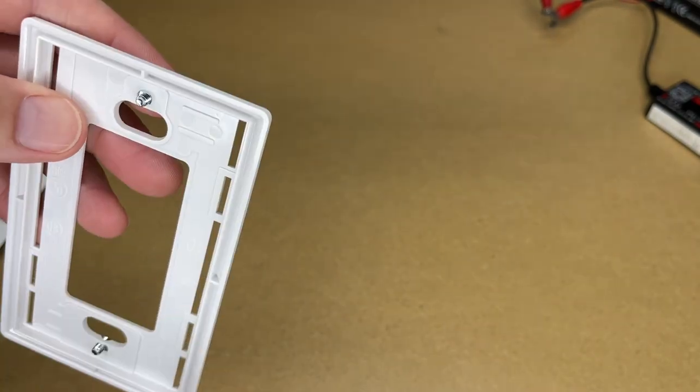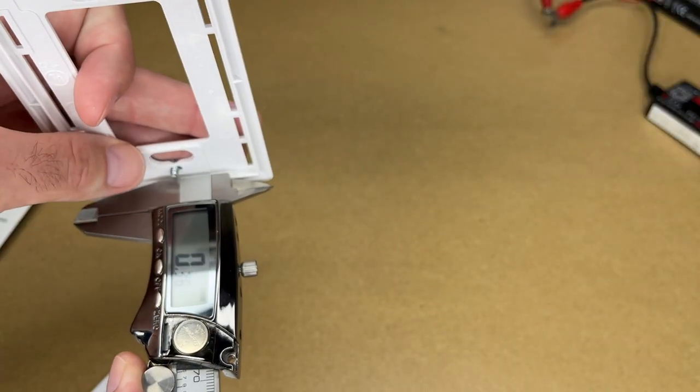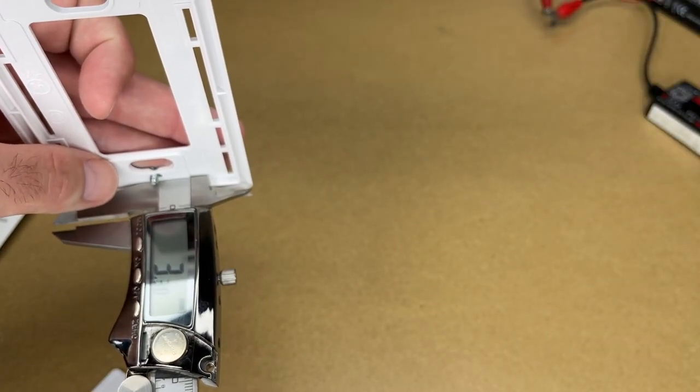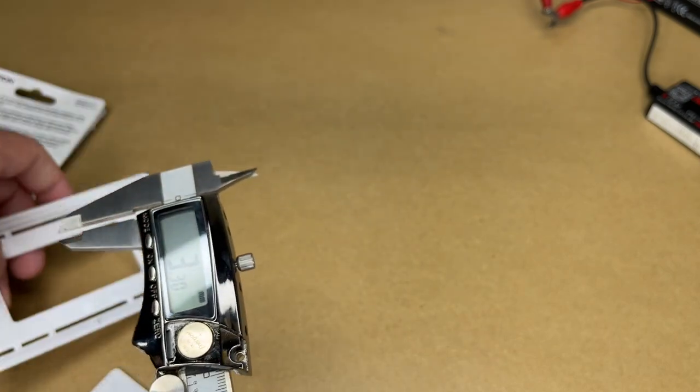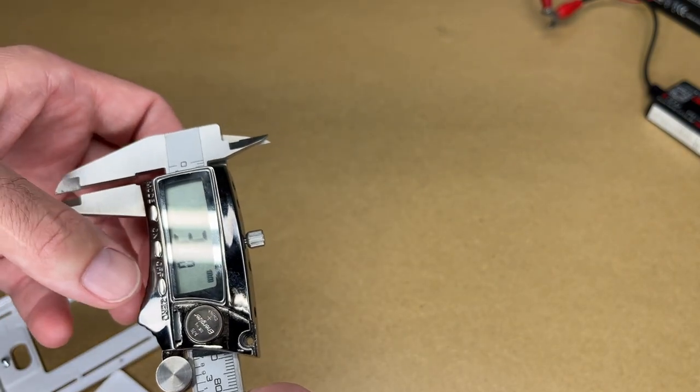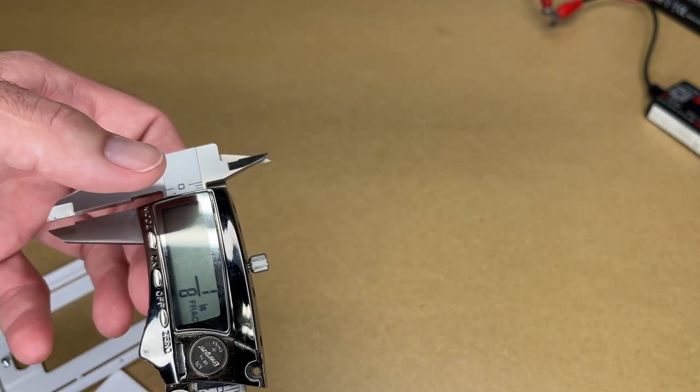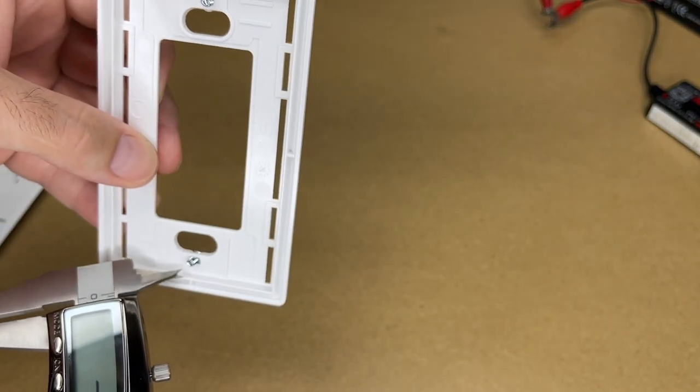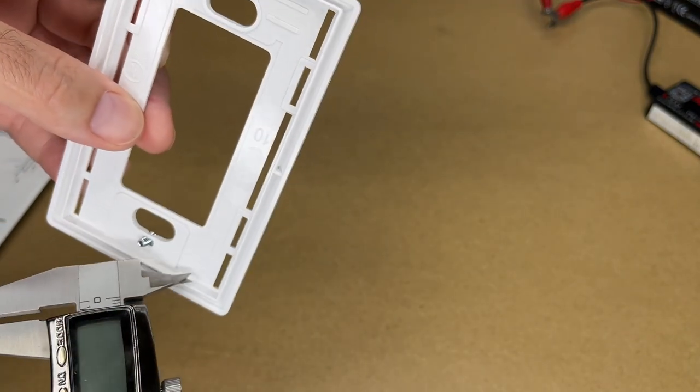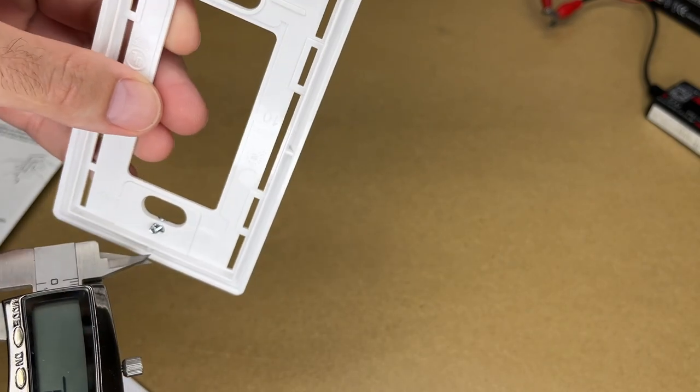Let me get a measurement on the depth of this. I got 3.3 millimeters, 0.13 inches, or an eighth of an inch. Now I measured it on the end here, and it kind of goes up and down just a little bit. That looks like it's probably the shallowest part.